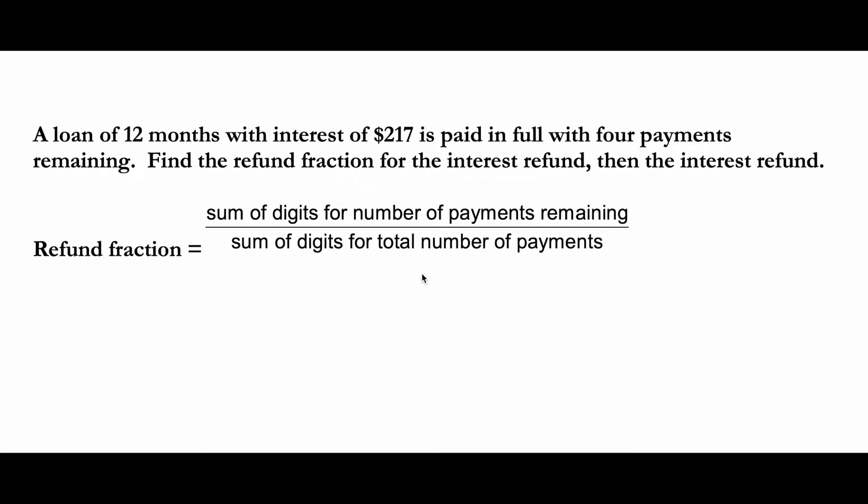The formula to find the refund fraction is equal to the sum of digits for the number of payments remaining divided by the sum of digits for the total number of payments. So as per our question, in the numerator, sum of the digits for number of payments remaining,